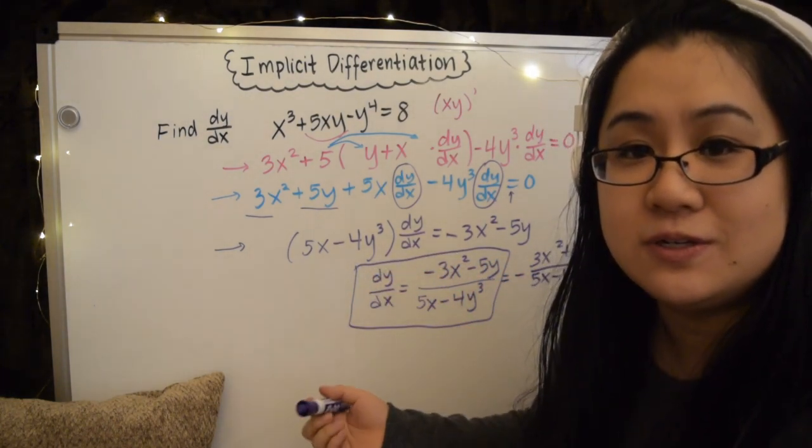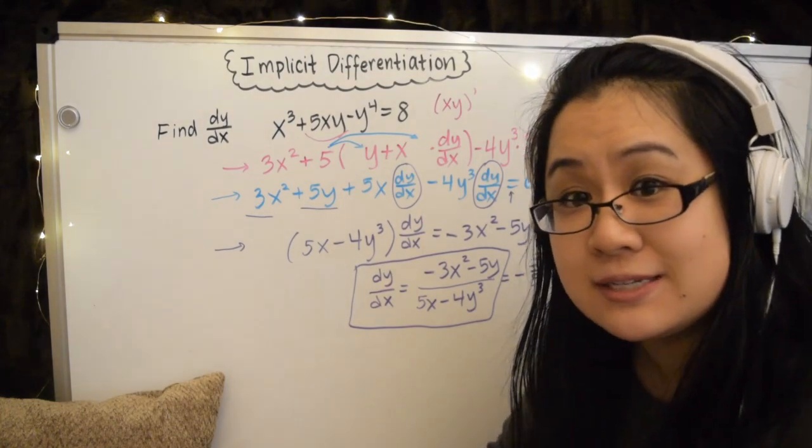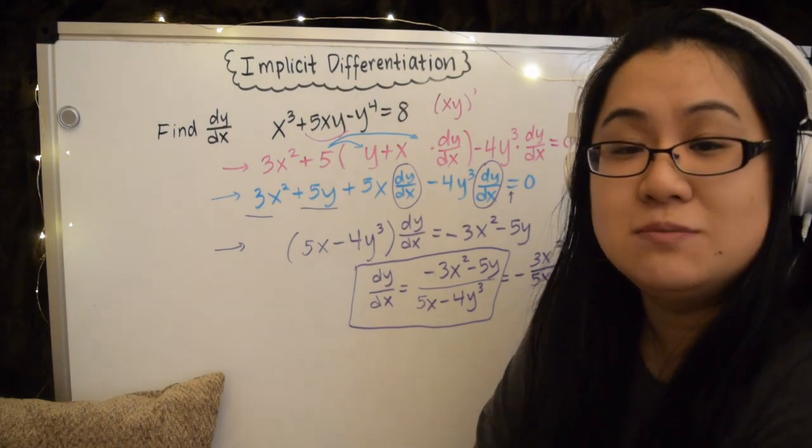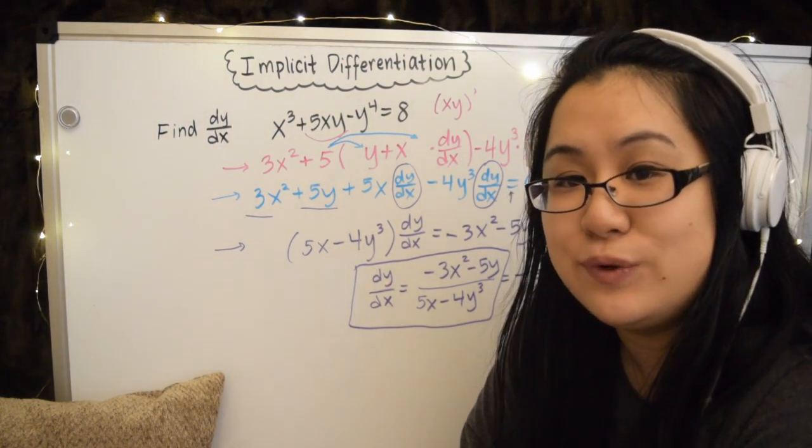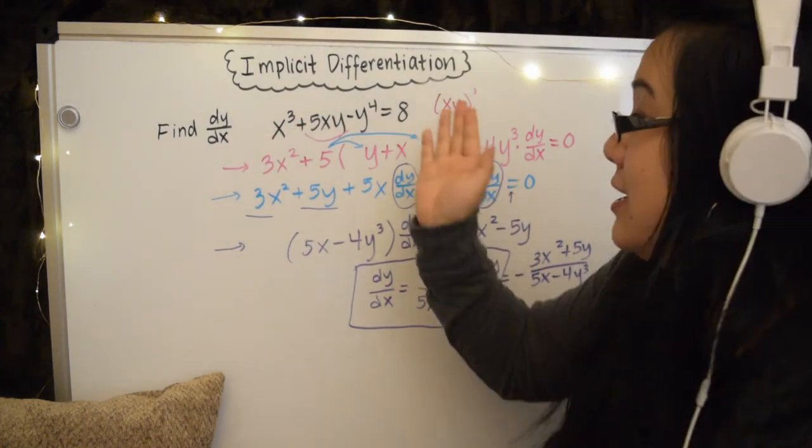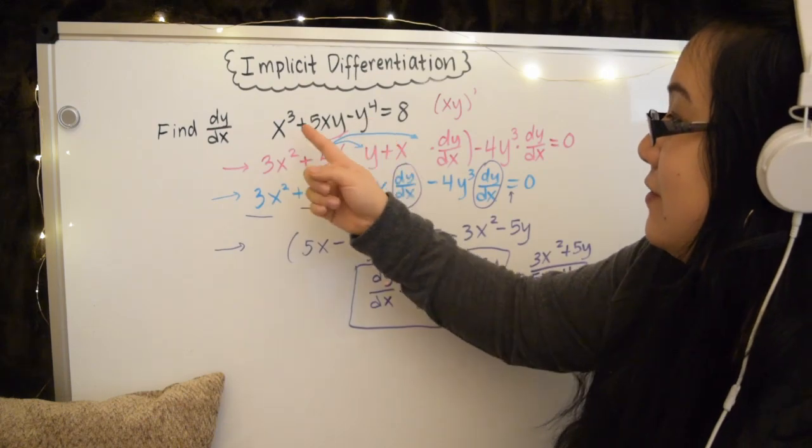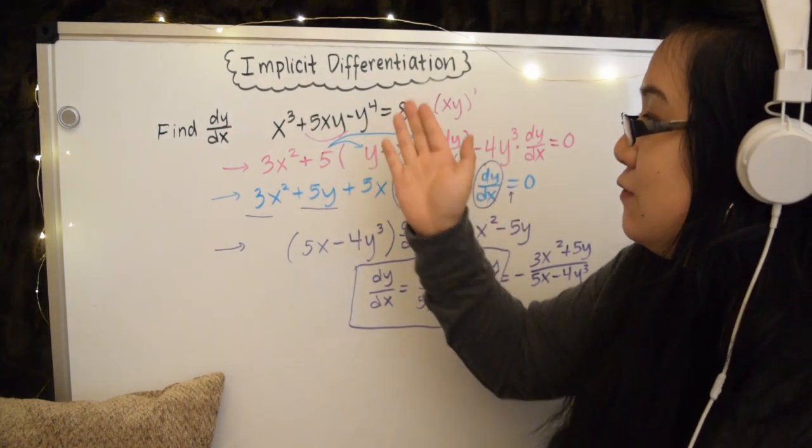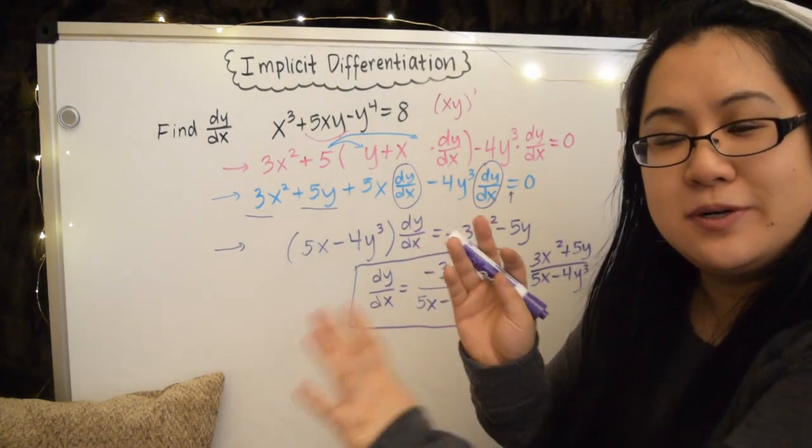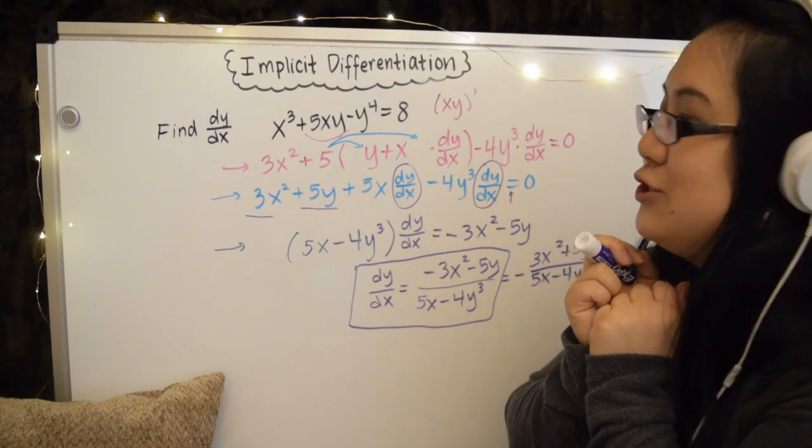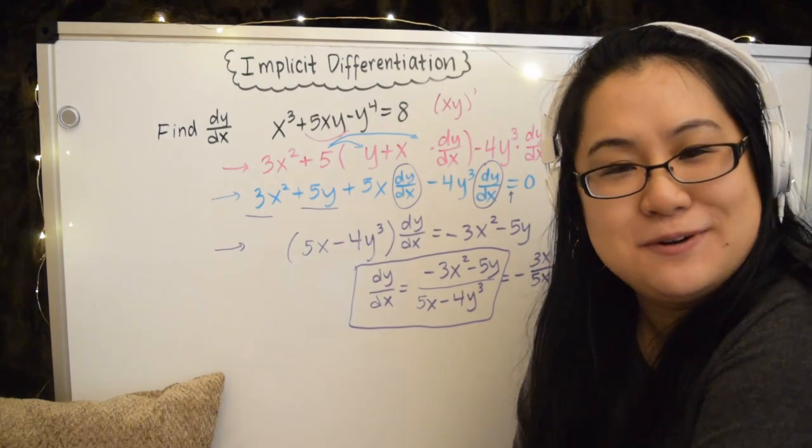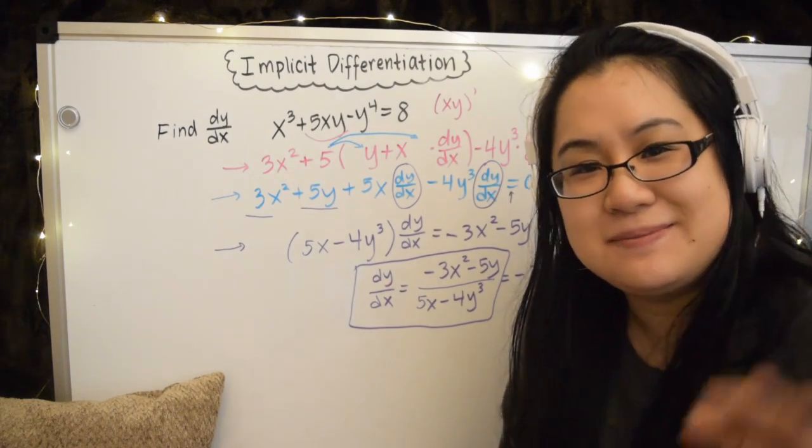And so now again, notice that we got dy/dx, but it's an expression with x and y. So we can plug in specific x and y coordinates if we want to. But this again gives us a way to find dy/dx, even though we don't have an explicit function for y in terms of x. Anyways, I hope between part 1 and part 2 this can help clarify any issues that you had with implicit differentiation. And I will see you around soon. Till next time. Bye!